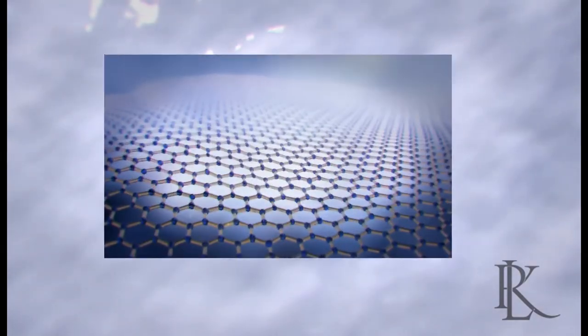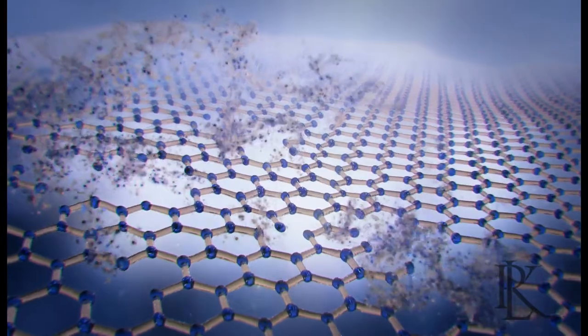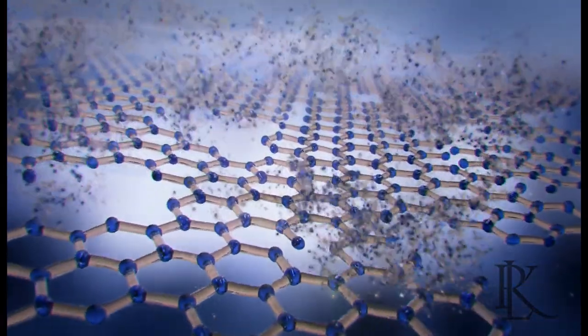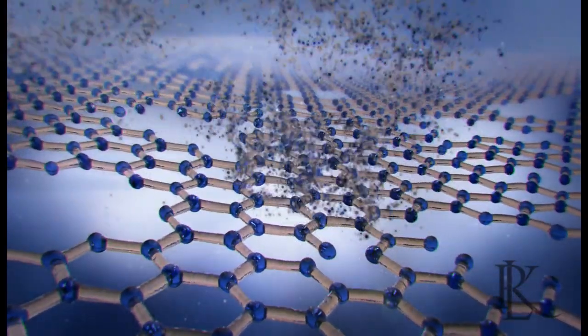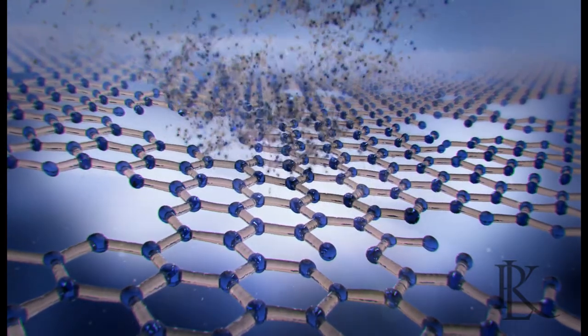Human enamel is comprised of microscopic layers of carbonate apatite and hydroxylapatite crystals. During acidic challenges, hydroxyl and carbonate ions are readily dissolved from the crystalline framework, resulting in subsequent loss of calcium and phosphate. While saliva naturally replenishes the lost calcium and phosphate, often it cannot overcome daily acidic attacks.